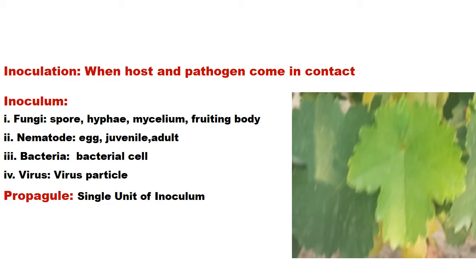When pathogens by any means come in contact with the plant, this process is known as inoculation. Inoculation was derived from 'inoculum,' and the inoculum is basically any part of the pathogen which is capable of causing the disease. In the case of fungi it could be a spore, hyphae, mycelium, or the fruiting body. This is one of the reasons why fungi cause most diseases — because there is diversity in their inoculum.